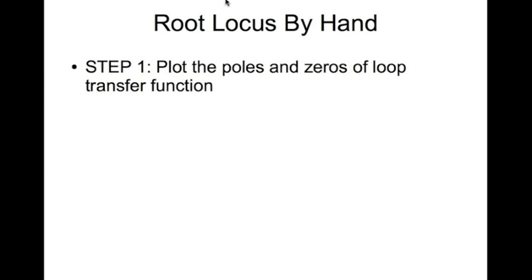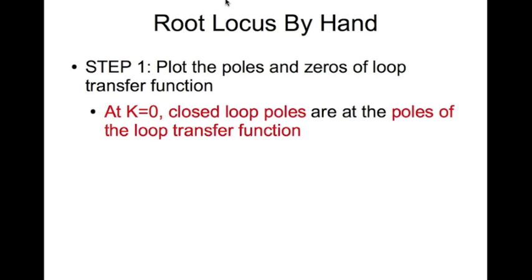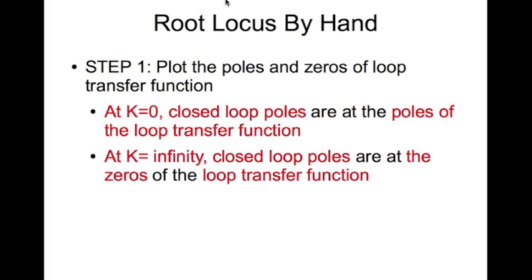Root locus by hand. The first step is to plot the poles and zeros of the loop transfer function. This is important because at k equal to 0, the closed-loop poles are at the poles of the loop transfer function, and at k equal to infinity, the closed-loop poles are at the zeros of the loop transfer function.